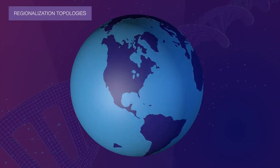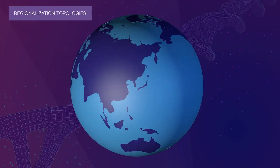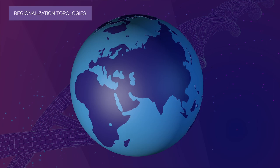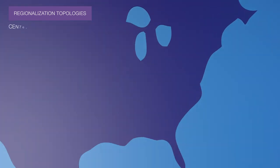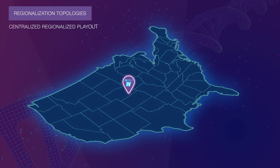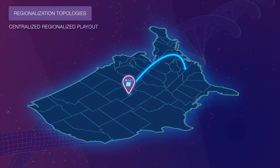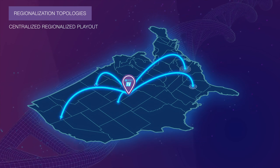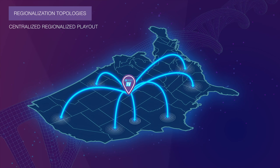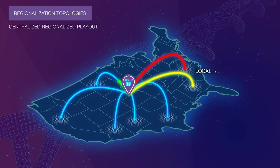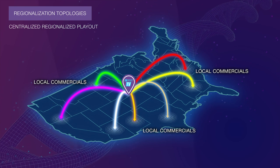Broadcasting different content to different regions for targeted advertising and local program content can be a challenge, but not with a Grass Valley solution. With regionalized playout from a central location, the main network TV channel coming from the central broadcasting facility is not only sent to the national audience, but also to different regional audiences. The regional audience receives local commercials for local businesses, which are managed and scheduled at the central facility.